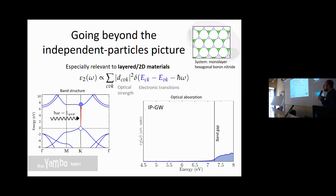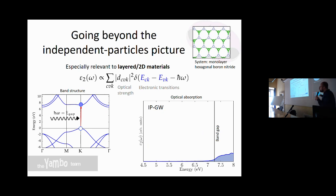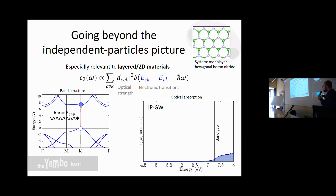Here is how we compute optical absorption using time-dependent perturbation theory at first order — the Fermi golden rule — with independent particles. Then we add a GW calculation, not DFT level, and compute the optical absorption. We get this result.